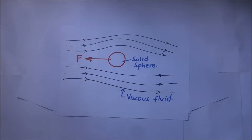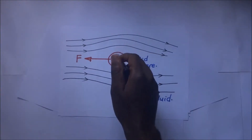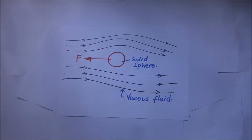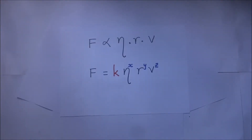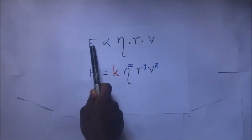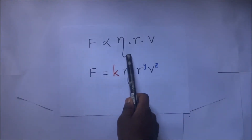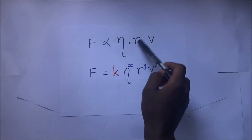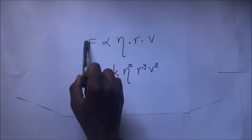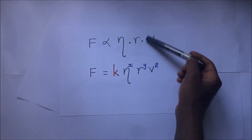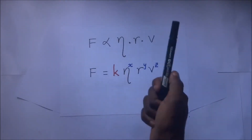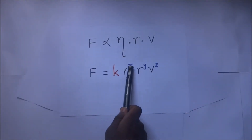We need to look at those parameters. These three parameters that affect viscous drag — the coefficient of viscosity, the size of the body, and the velocity of the body — form the basis for what we call Stokes' Law. We do not yet know whether these things are directly or inversely proportional; we need to investigate by finding the indices x, y, and z.